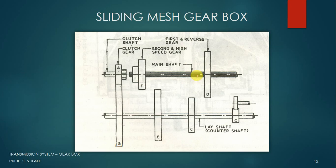Similarly, gear F is also mounted and can move horizontally. Gear D is called the first and reverse gear, whereas gear F is called the second and high speed gear. Some teeth are also provided after gear A which can mesh with gear F. There is also one more gear used for reverse direction, which we will see later. This is the construction of the sliding mesh gearbox, and different torque and speed outputs can be achieved at the output shaft.